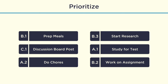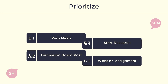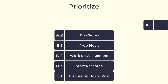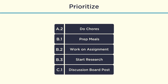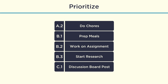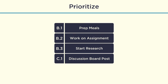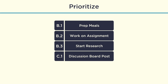Pay attention to your time estimates assigned to each item, and be realistic about what you can accomplish in the time that you have. Now tackle each item on the list in order, starting with your A1 item. Finish everything in the A category before moving to the B category.